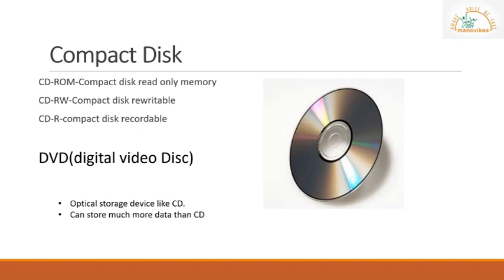Compact disks or CDs are also known as optical storage devices. CDs are available in two kinds: CD-R (recordable), where you record once and cannot record again, and CD-RW, where you can rewrite on the CD more than once. Just like compact disks, you also have DVDs — digital versatile disks. DVDs are similar to CDs in the way data is stored, but DVDs have more capacity to store data. Nowadays, CDs and DVDs are less commonly used as they get spoiled with moisture and also have limited capacity.